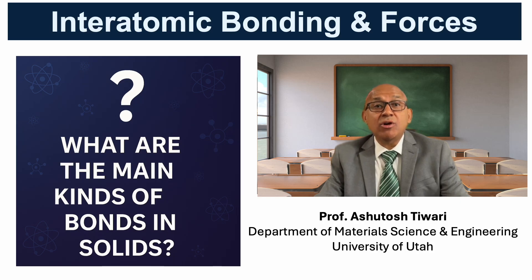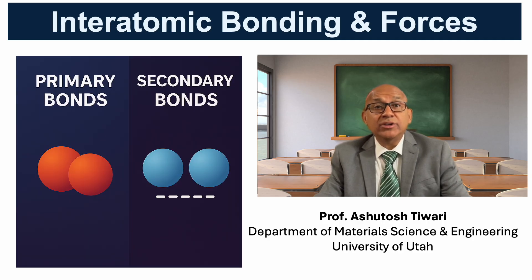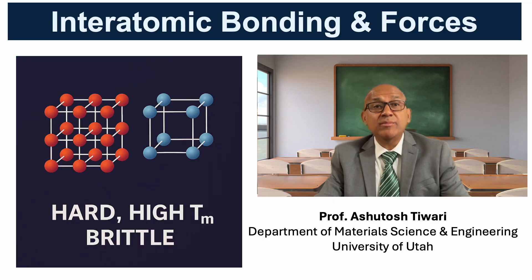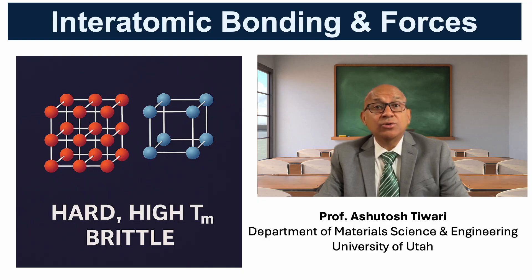Interatomic forces can be broadly divided into two main categories: primary bonds and secondary bonds. Primary bonds are a stronger type and they form the main structural framework of materials. There are three primary bond types. First, ionic bonds — these occur when one atom transfers an electron to another, forming oppositely charged ions. The strong Coulomb attraction between cations and anions holds the lattice together. Sodium chloride and magnesium oxide are classic examples.